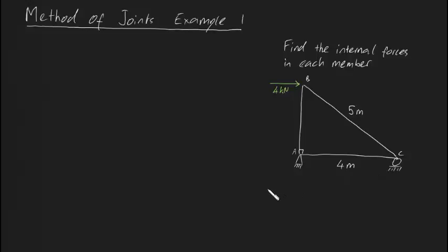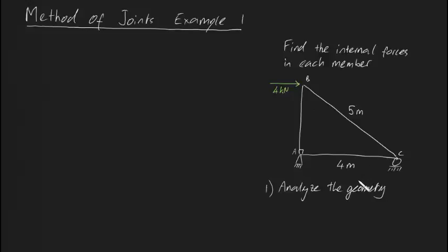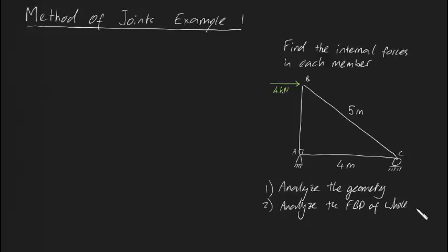Your method should be, in any particular truss problem: first, you analyze the geometry. That means we basically find unknown lengths of the truss and we fill in angles and stuff like that. That's the first step I usually like to go about solving fairly simple truss problems. The second step is to analyze the free body diagram of the whole truss.